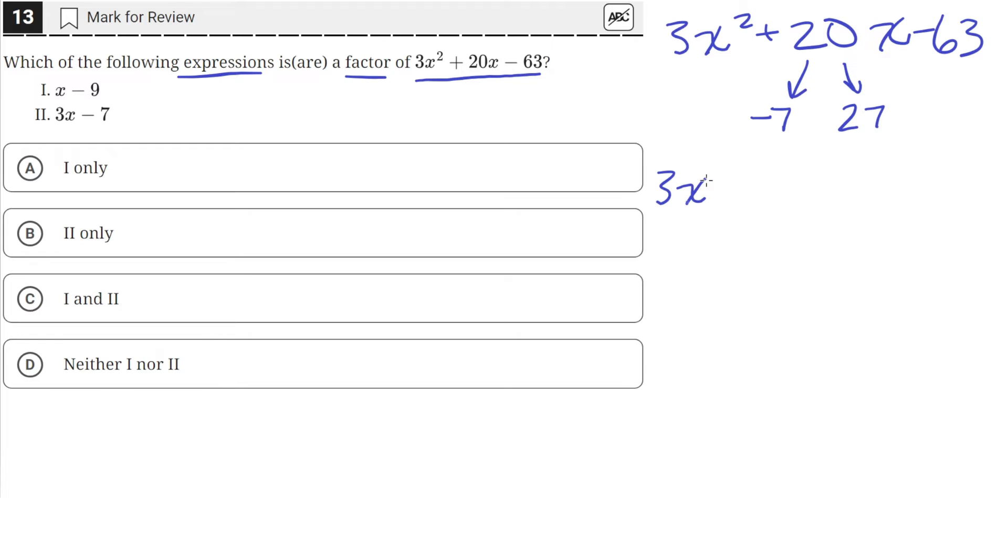So we're just going to split the 20x into negative 7x plus 27x minus 63.